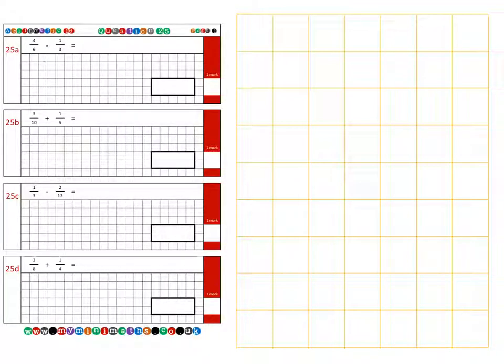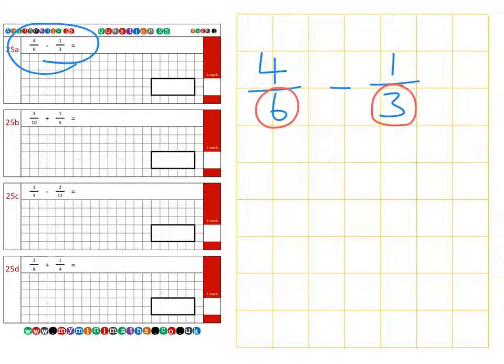So the first question, which is question 25a, is four sixths subtract one third. First thing we need to do is make sure these two denominators are the same. We call these common denominators. Now the easiest way to do this is to change the three into six which will match the first fraction.